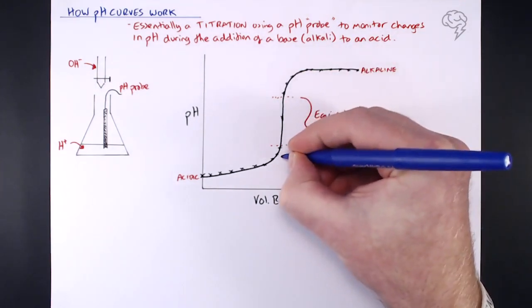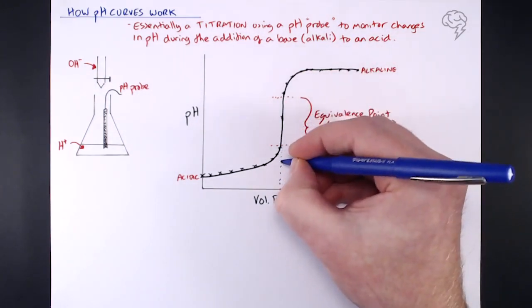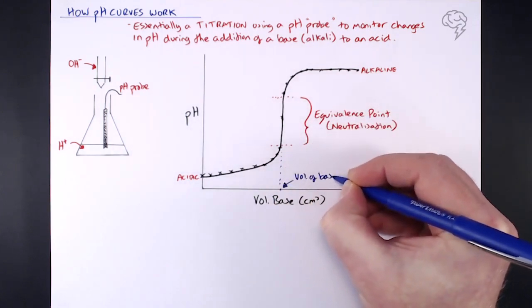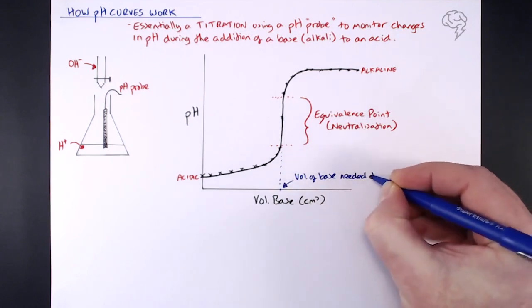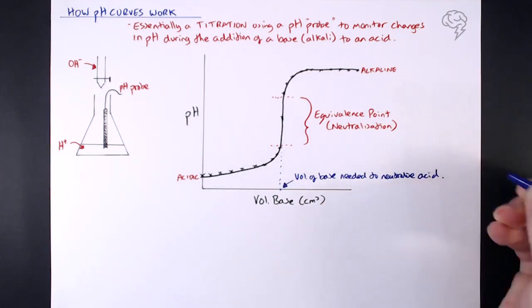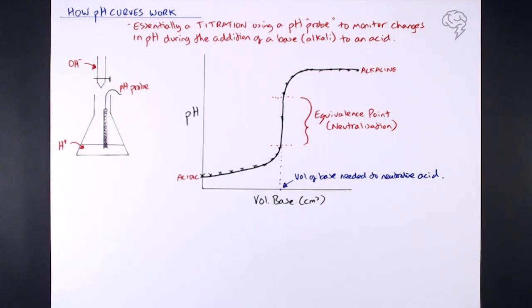And actually find the volume of the base needed to perfectly neutralize that acid. So this is the volume of base needed to neutralize the acid. So this is your typical pH curve. Now they do come in different shapes and sizes - we'll talk about that in a second.